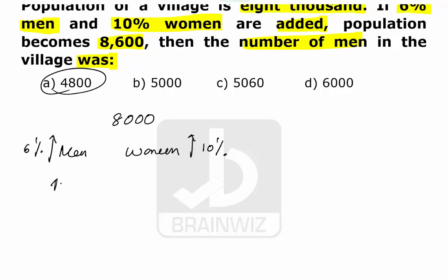So let's try to go with the first option. Let it be 4800 men. When 4800 men are there, the remaining women are 3200. So how we got women is from 8000 if you remove this 4800, which results in 3200 women.